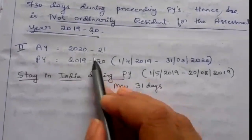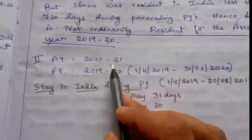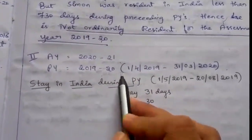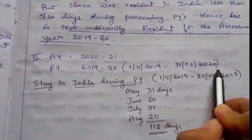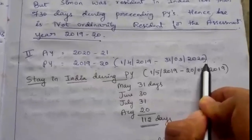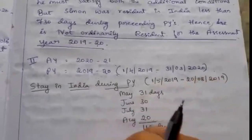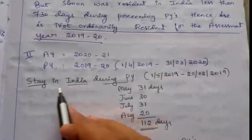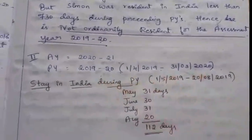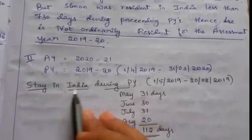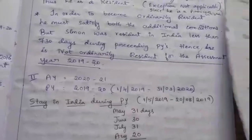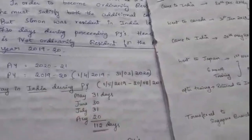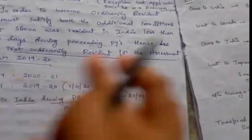For the second case - assessment year 2020-21: for this assessment year, the previous year is 2019-20, which starts from 1st April 2019. In order to find the residential status, we have to find whether he applies the condition. First condition: stay in India during the previous year. The previous year starts from 1st April 2019.